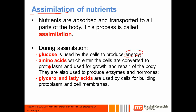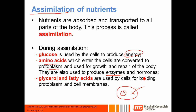Amino acids, once they enter cells, are used to produce protoplasm, which is used for growth and repair of the body. Amino acids are also used to produce enzymes — because enzymes are made of proteins — and also hormones. Glycerol and fatty acids are used for building cell protoplasm, so they make the material inside the cell, but they are also used to form cell membranes, which give the cell its shape.